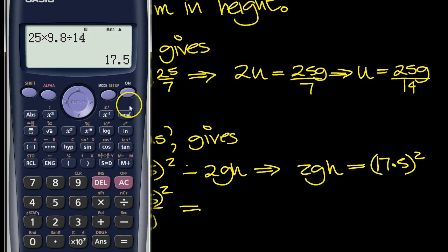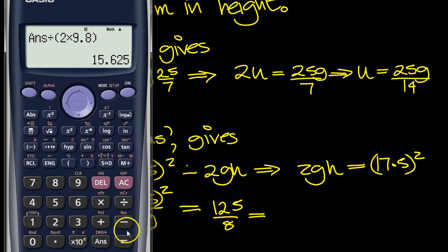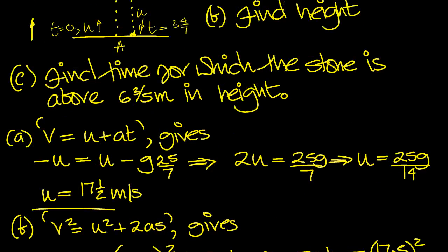So tap that in the calculator then. We've already got that in the calculator, so we'll square it and divide that by 2 times g, equals 15.625. Or as a fraction, it's 125 over 8, which as a decimal was 15 and 5 eighths. Is the height in meters. So there's the height.